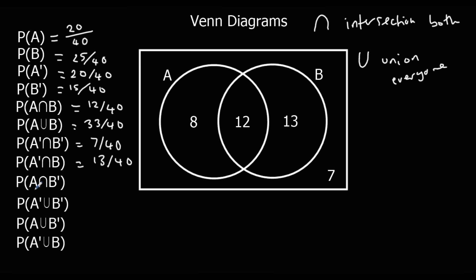Here we've got the intersection of A and not B. A is those two sections, and not B is those two sections. So the intersection is going to have to be 8 — it's the only one that's both of them. 8 out of 40.